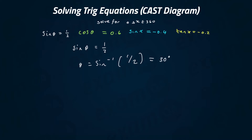Now, this is your principal value. The principal value is the first value you get from your calculator. But there are more values — theta is not just one number, it's a few more. In fact, technically it's an infinite amount of numbers, but here we only want a specific amount.